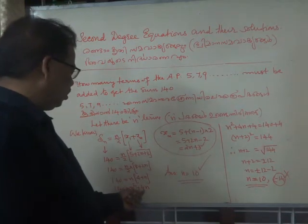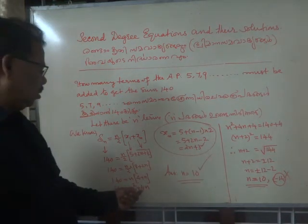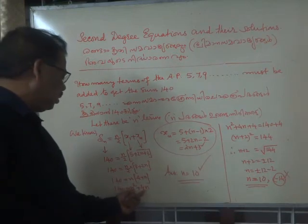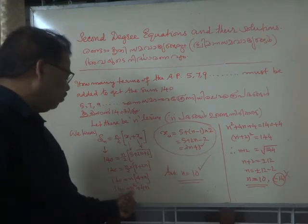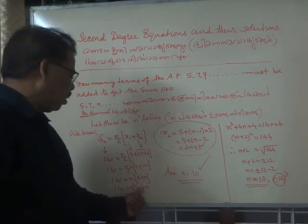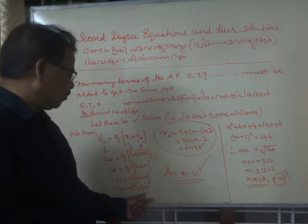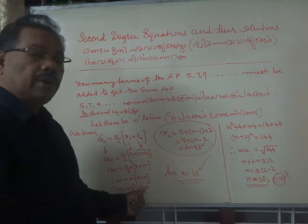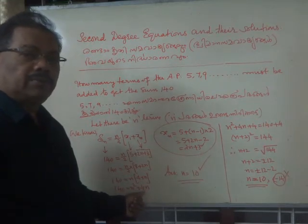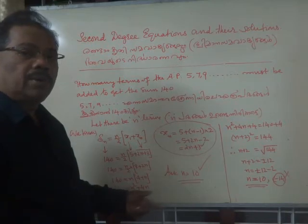This is in the right. There is a square term and a term of first degree. You find the coefficient of the first degree term, that is 4, take half of it, that is 2, square it and add on both sides.